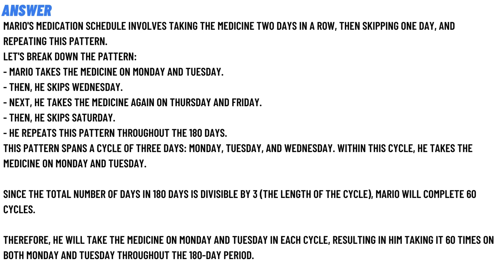Then he skips Wednesday. Next, he takes the medicines again on Thursday and Friday, then skips the next day. He repeats these patterns through the 180 days. These patterns span cycles of three days — Monday, Tuesday, and Wednesday. Within each cycle, he takes the medicines on Monday and Tuesday.